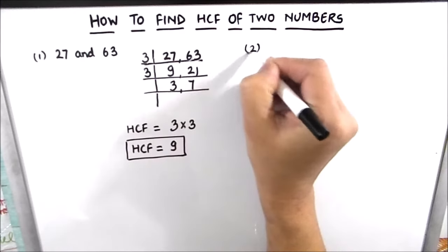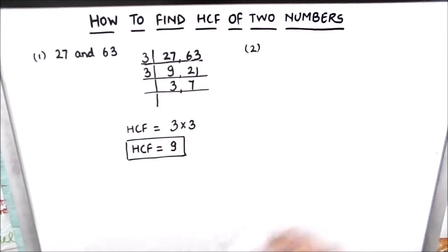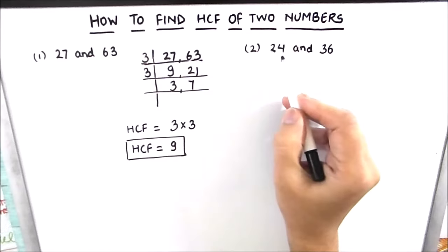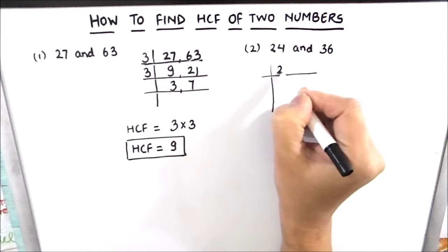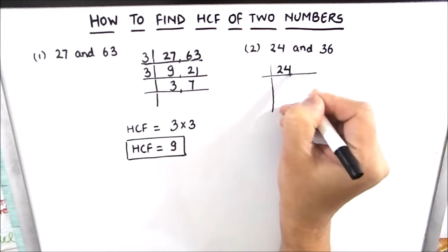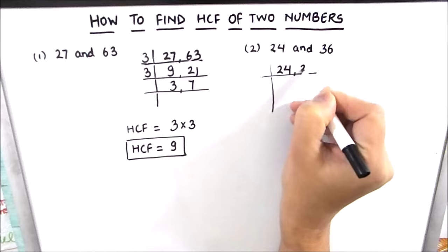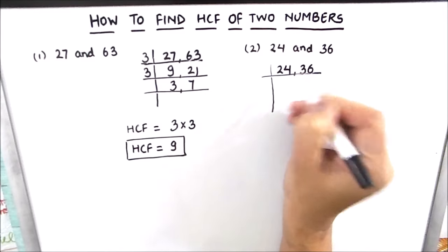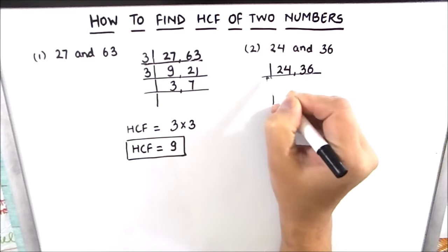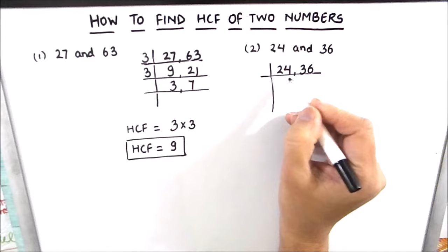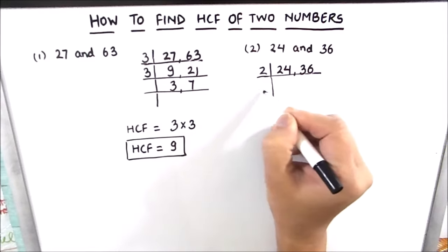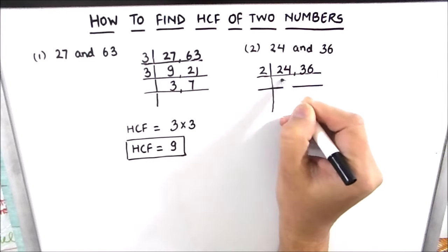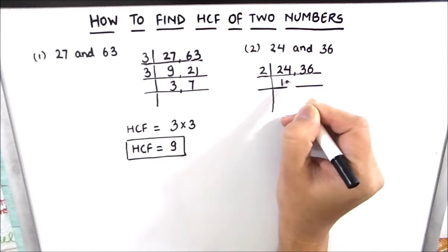Let's move on to our second example where we find the HCF of 24 and 36 using the ladder method. We write the two numbers together and divide them by their common factors. Their common factor is 2, as both numbers are even.